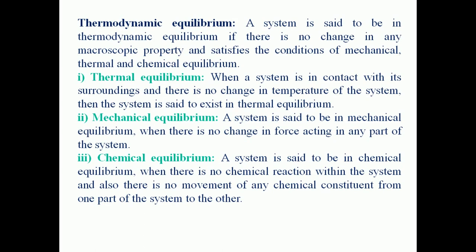Chemical equilibrium: a system is said to be in chemical equilibrium when there is no chemical reaction within the system and there is also no movement of any chemical constituent from one part of the system to another.